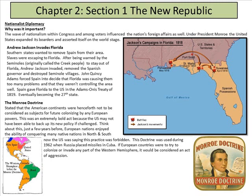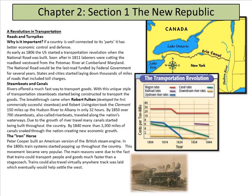Now that the U.S. was in control of this massive landmass, transportation was needed. A revolution in transportation: roads and turnpikes. If a country is well connected to its parts, it has better economic control and defense. As early as 1806, the U.S. started a transportation revolution when the national road was built.